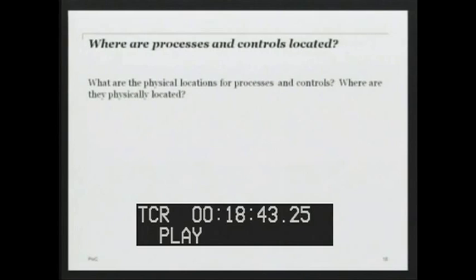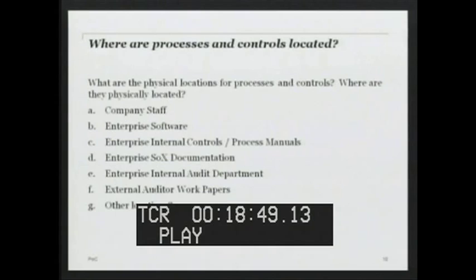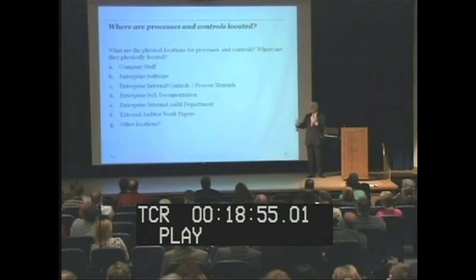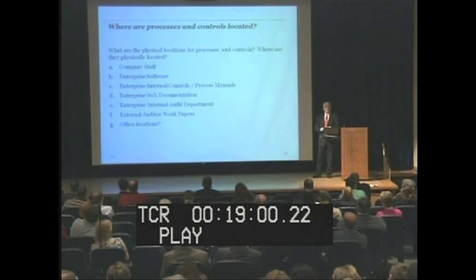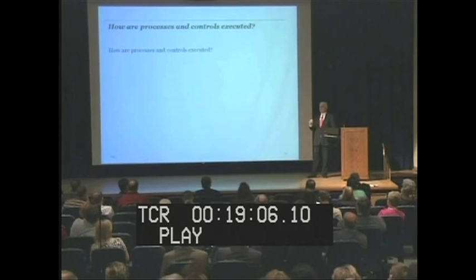What are the physical locations for these controls and processes — where do they actually reside, where do they live? They live in people like yourselves. They live in systems. They live in work papers of some type. Enterprise systems, maybe desktop systems. They exist everywhere, that's the point. Now, how are they executed? They're executed basically in one of two ways: either you've automated them, or they're manual. I can outsource it, I can do it myself. But that's the basic idea — they're either automated or they're manual.